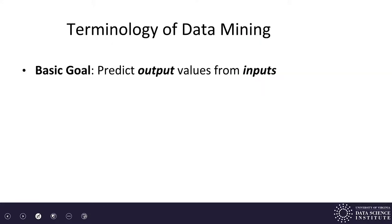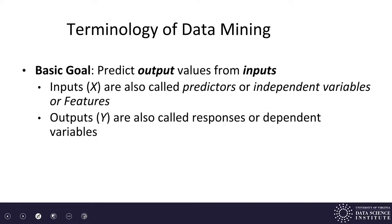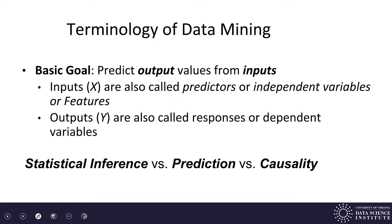Let's talk about some terminology. The basic goal we discussed in data mining is to predict outputs from input values. Inputs are sometimes called predictors, independent variables, or features. Output values are sometimes called responses or dependent variables. There are three different goals we might have in data mining: statistical inference versus prediction versus causality.